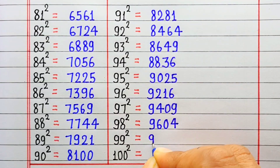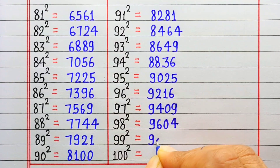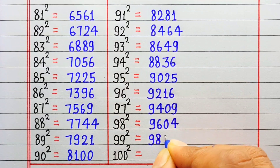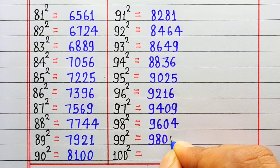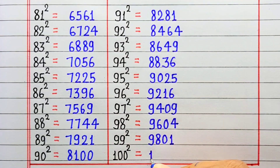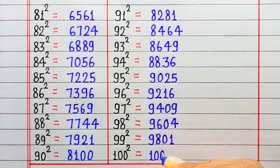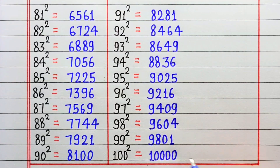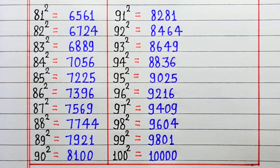Square of 99 is 9801. Square of 100 is 10000. Friends, like this video and please subscribe to my channel. Thanks for watching this video. Bye bye.